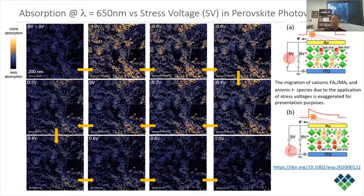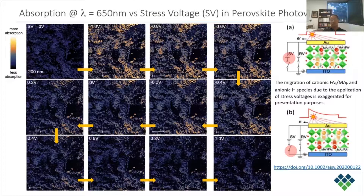The last image at plus 1 volt is similar to the original image at 0 volt, suggesting that the electric field-induced ion migration in the perovskite film is almost fully reversible. This shows that visible PIFM can effectively measure the performance of the photovoltaic film and complement the chemical understanding of photovoltaic materials that can be gleaned from IR PIFM.